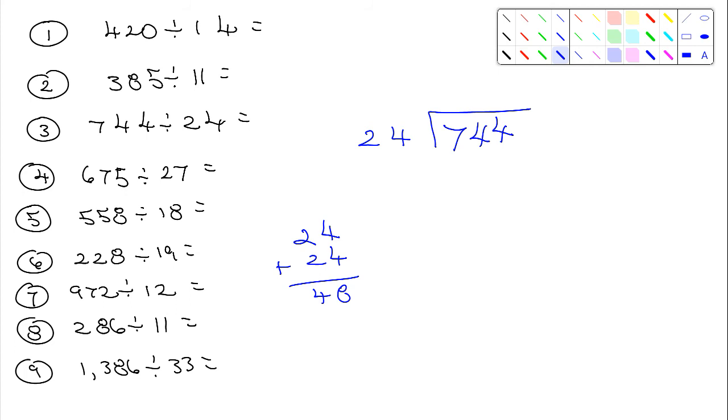So let me add another 24 and see what happens here. 4 plus 8 is 12, put down the 2, carry the 1. That's 5, 6, 7, that's 72. So that's really close.